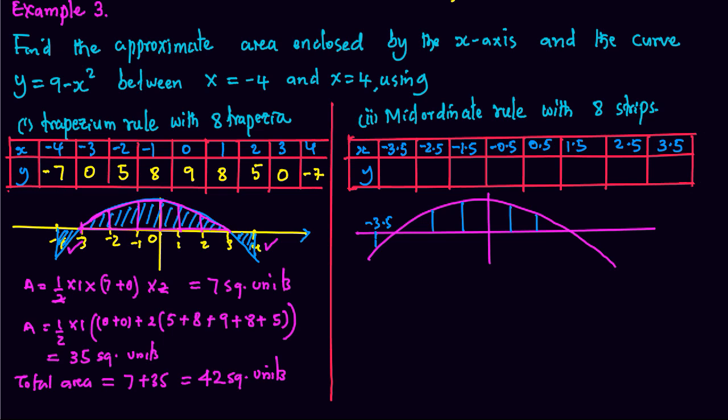We have the mid ordinates at negative 2.5, mid ordinates at negative 1.5, mid ordinates at negative 0.5, mid ordinates at 0.5, mid ordinates at 1.5, and mid ordinates at 2.5. And lastly, mid ordinates at 3.5.